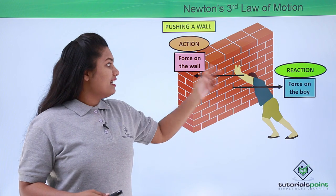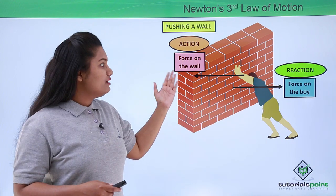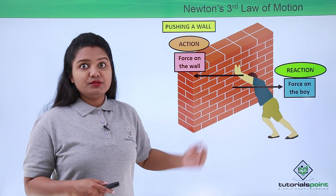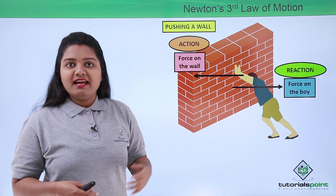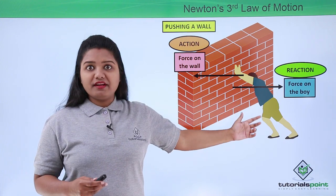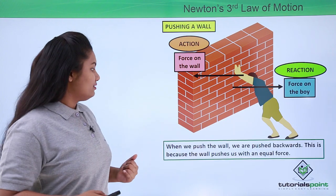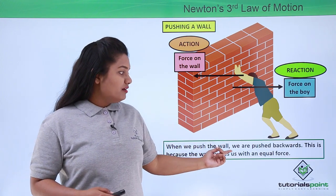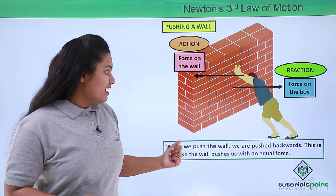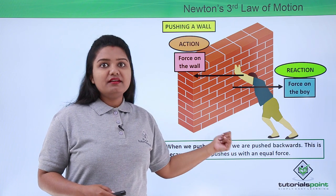These two forces are acting on two different objects and are equal in magnitude and opposite in direction, which is the reason why neither the wall nor the boy moves at all. When we push the wall, we are also pushed backwards by the wall because the wall pushes us with an equal force.